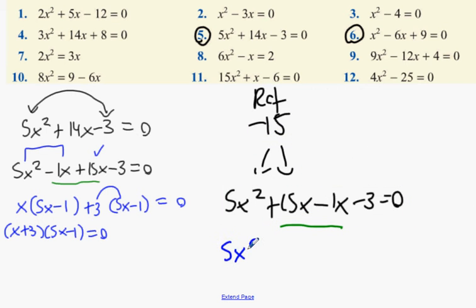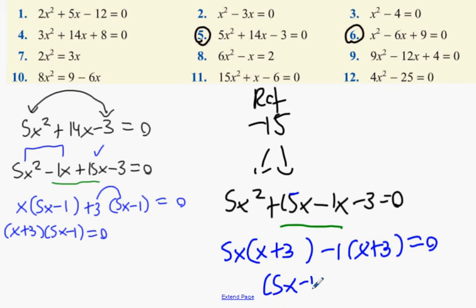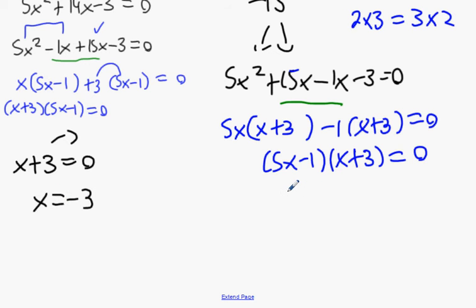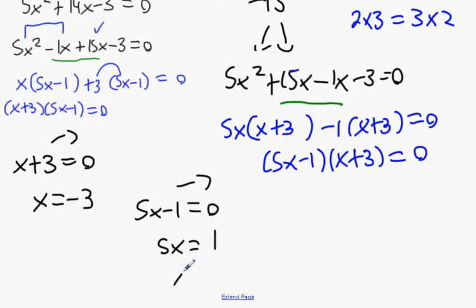Take out 5x and what you're left with is x plus 3. The second bracket has to be the same, so minus 1 goes in there. Both answers are the same bracket but in different order — two multiplied by three equals three multiplied by two. Solving: x plus 3 equals zero gives x equals minus 3; 5x minus 1 equals zero gives 5x equals 1, x equals one fifth.